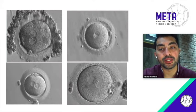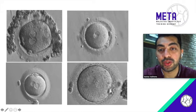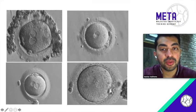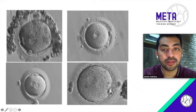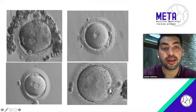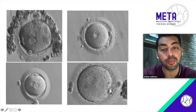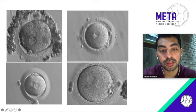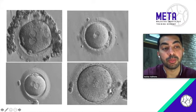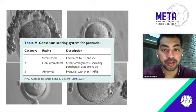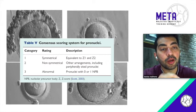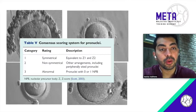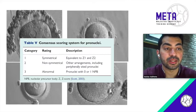When assessing pronuclei, the first thing to look for is that they should be of equal size. You also want to look at the alignment of the nucleoli and ensure both pronuclei have the same number of nucleoli. Such a pronucleus is graded as Grade 1 — a symmetrical pronucleus. Grade 2 is non-symmetrical, and Grade 3 is abnormal, where you have one large pronucleus, disjointed pronuclei, micro-pronuclei, or three pronuclei, etc.